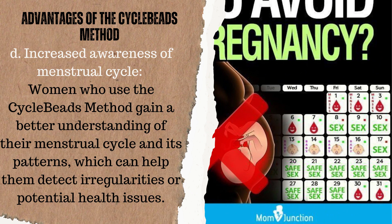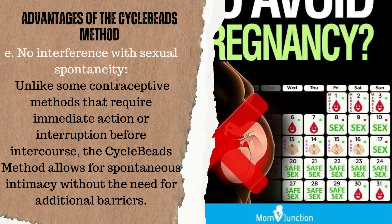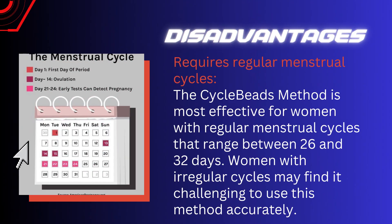Additional advantages include increased awareness of the menstrual cycle — women who use the cycle beads method gain a better understanding of their cycle and its patterns, which can help them detect irregularities or potential health issues. The method also allows for no interference with sexual spontaneity, unlike some contraceptive methods that require immediate action before intercourse, allowing for spontaneous intimacy without the need for additional barriers.